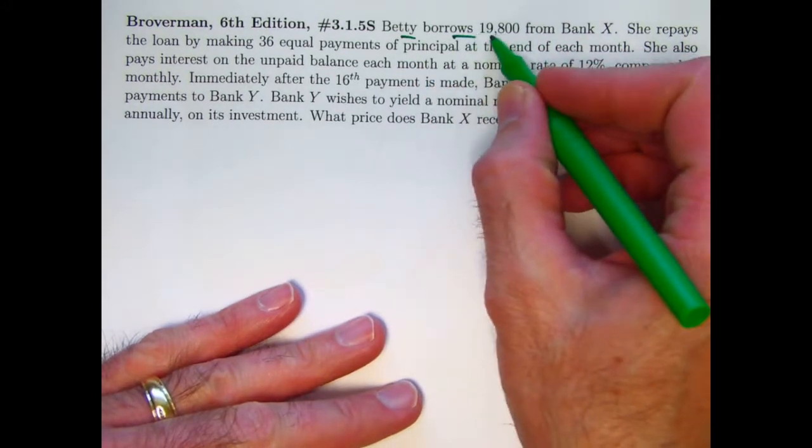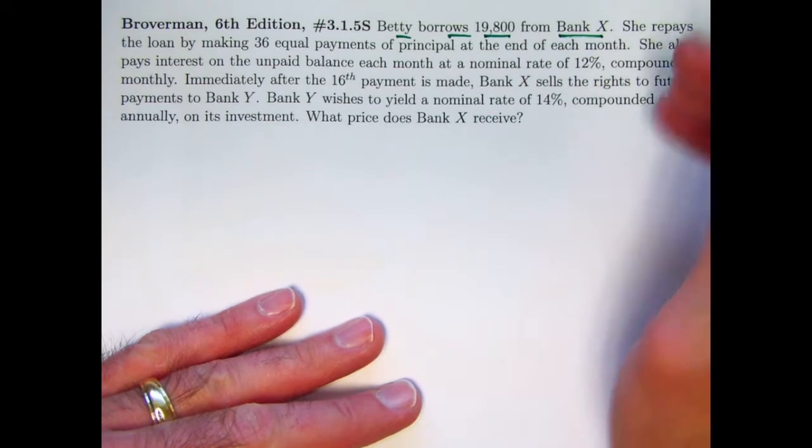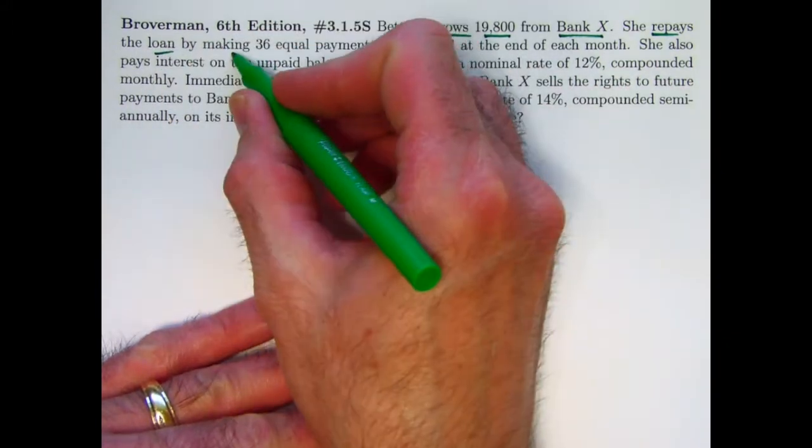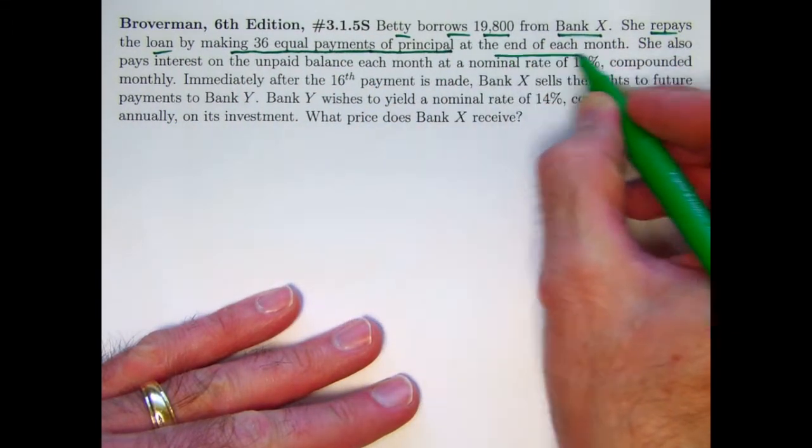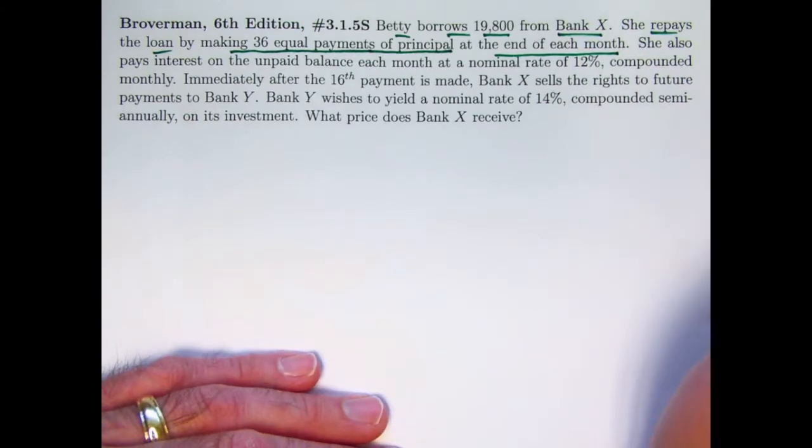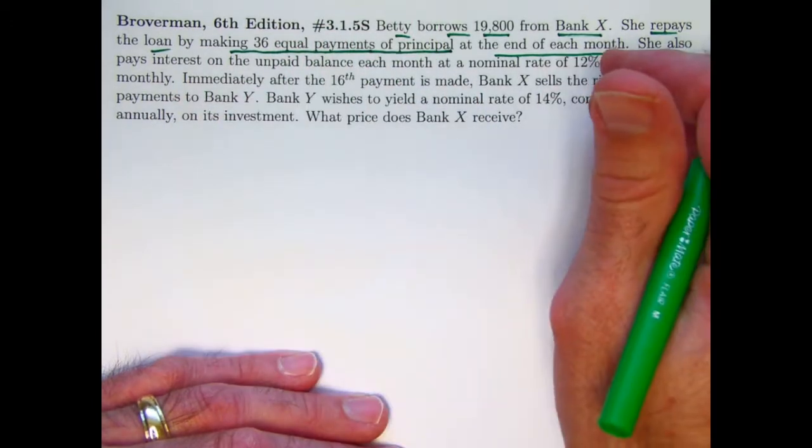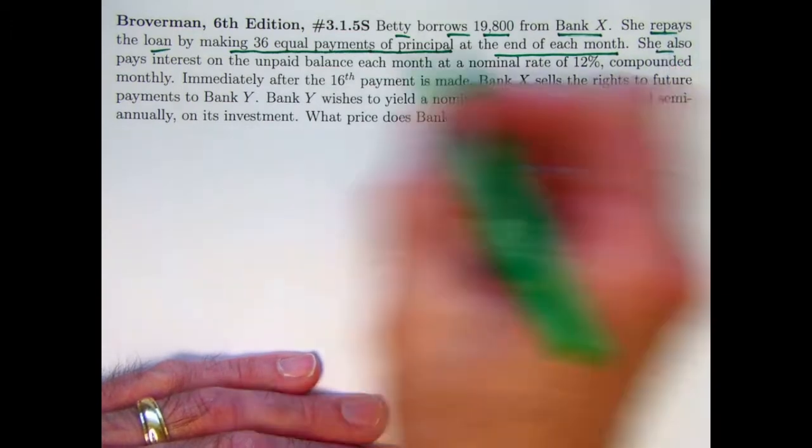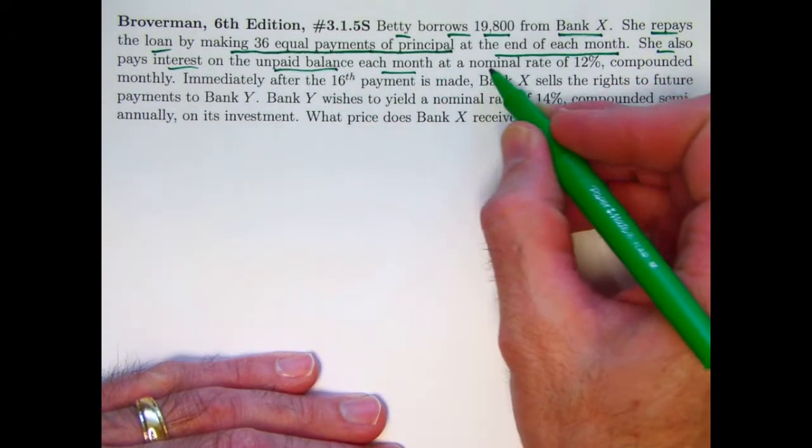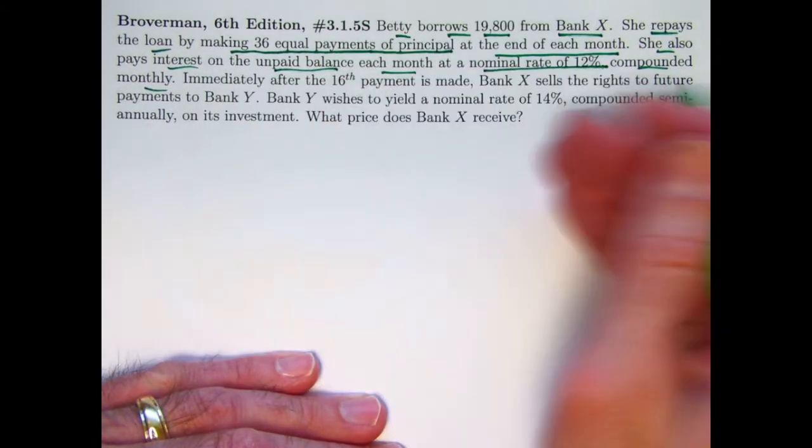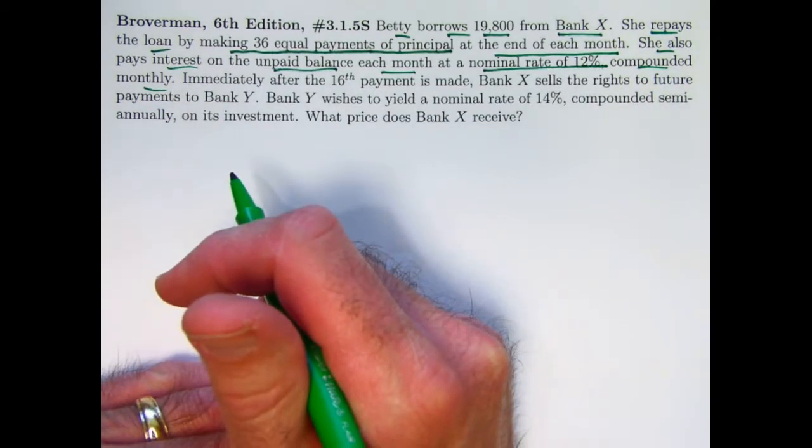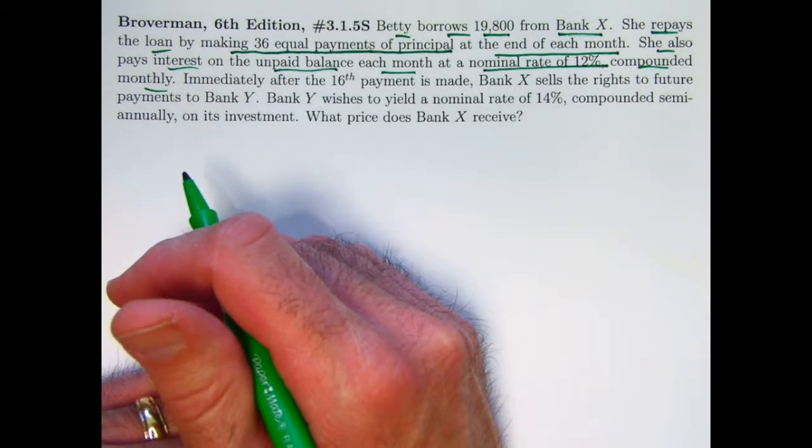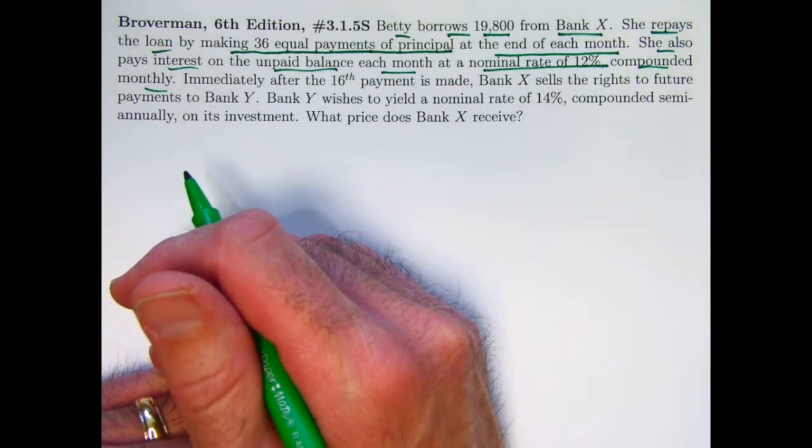Betty borrows $19,800 from Bank X. The repayment scheme as an amortized loan here is a little odd, it's not typical. She's repaying the loan by making 36 equal payments of principal at the end of each month. Usually, you make smaller payments to principal at the beginning and bigger at the end in order to keep your total payment each month level. Here, we're going to make equal payments to principal, and the interest that's paid on the unpaid balance each month at a nominal rate of 12% compounded monthly will go down each month because the total balance, the outstanding balance left on the loan, will go down.